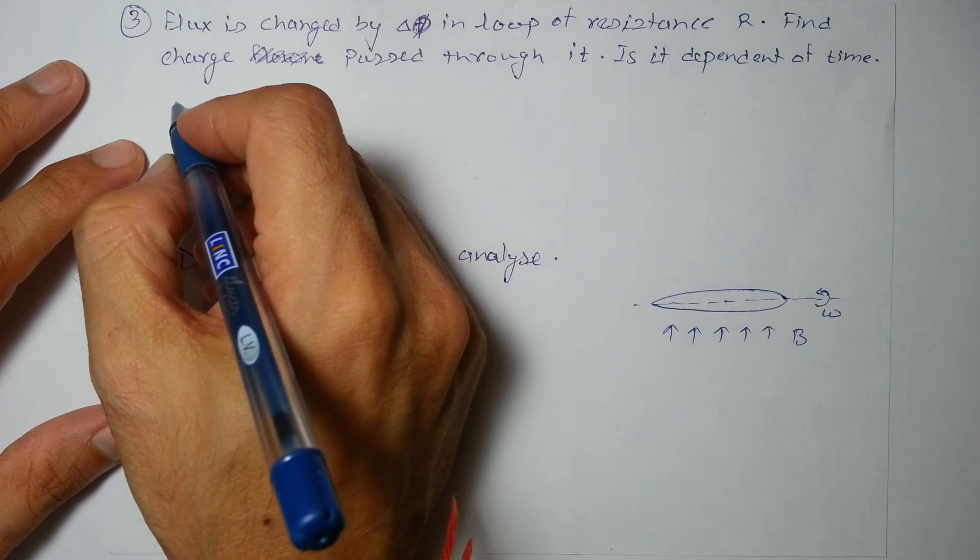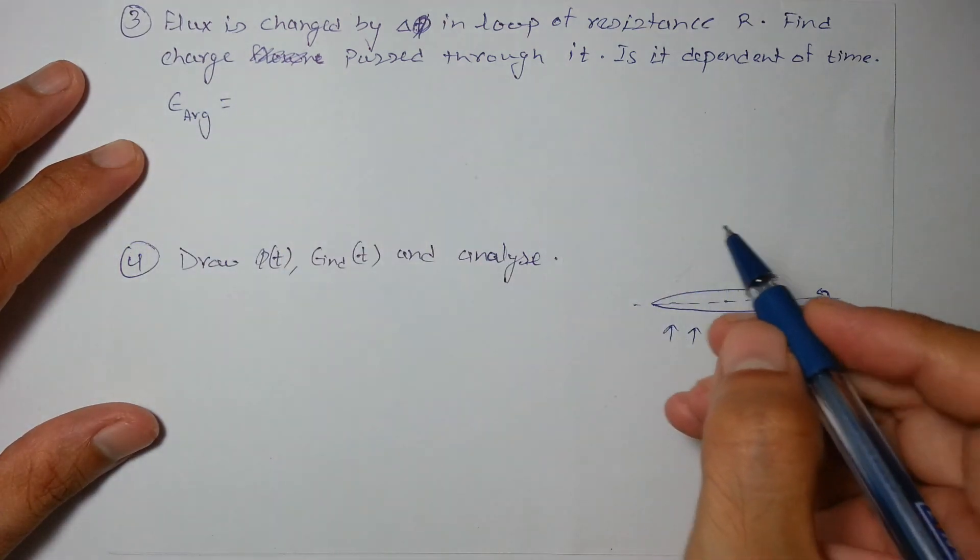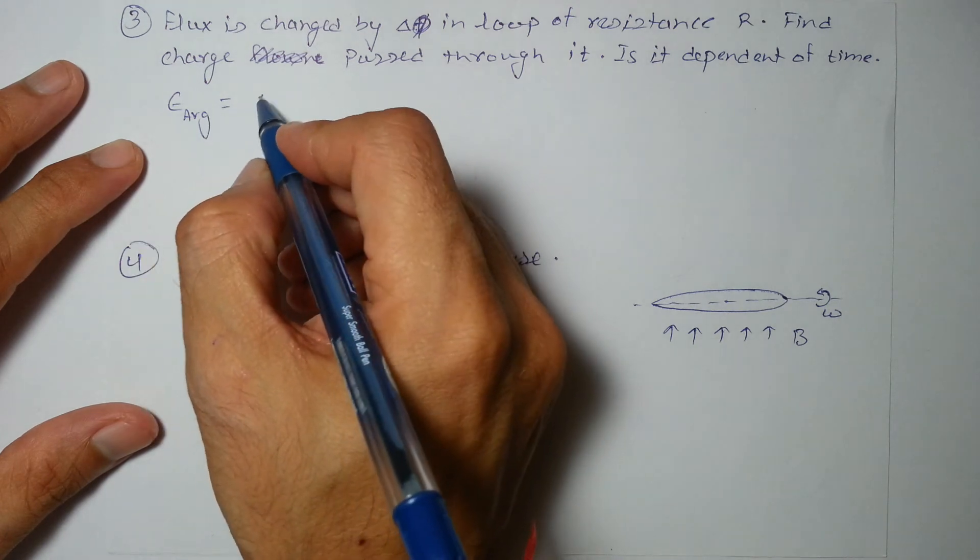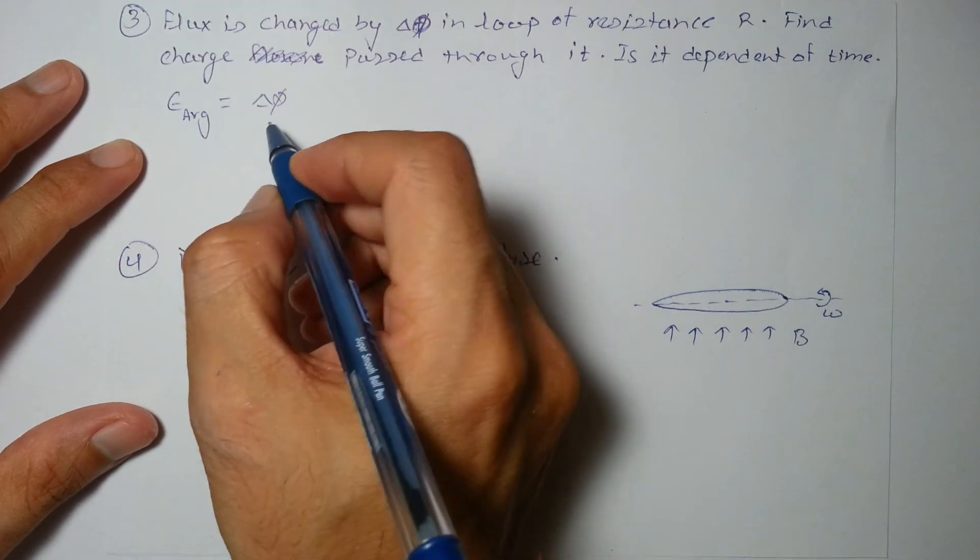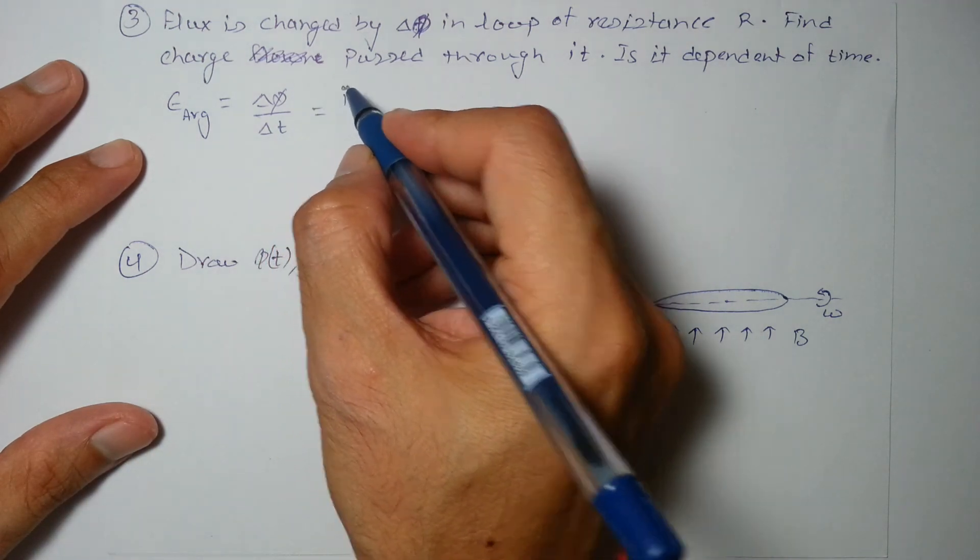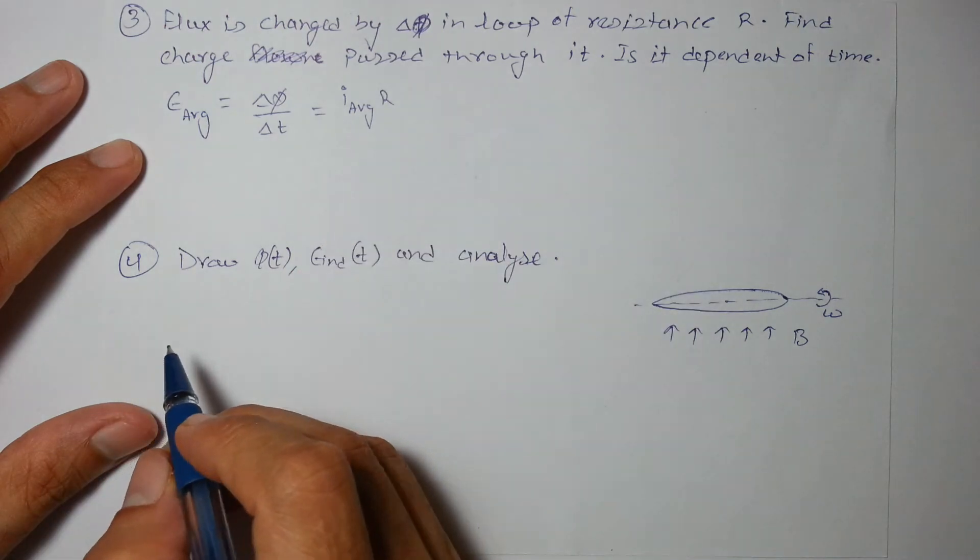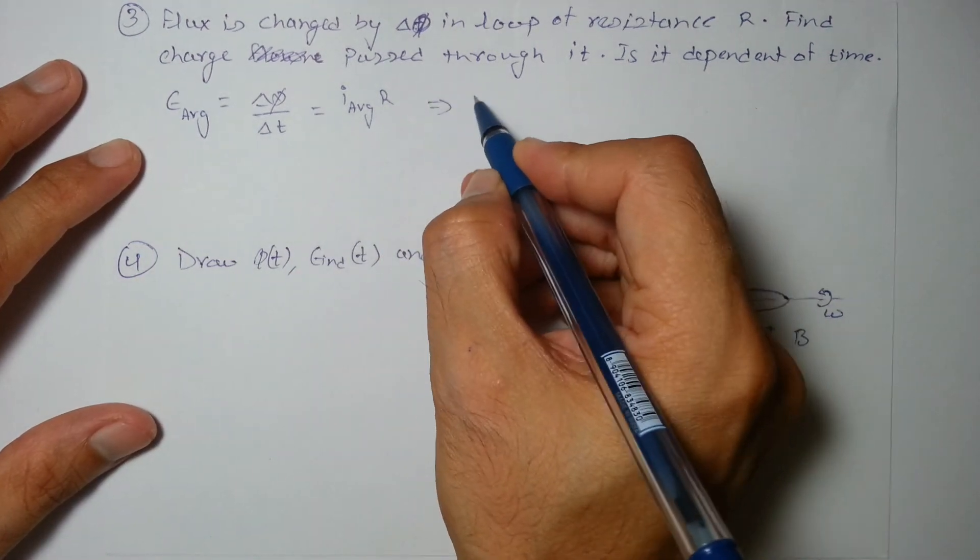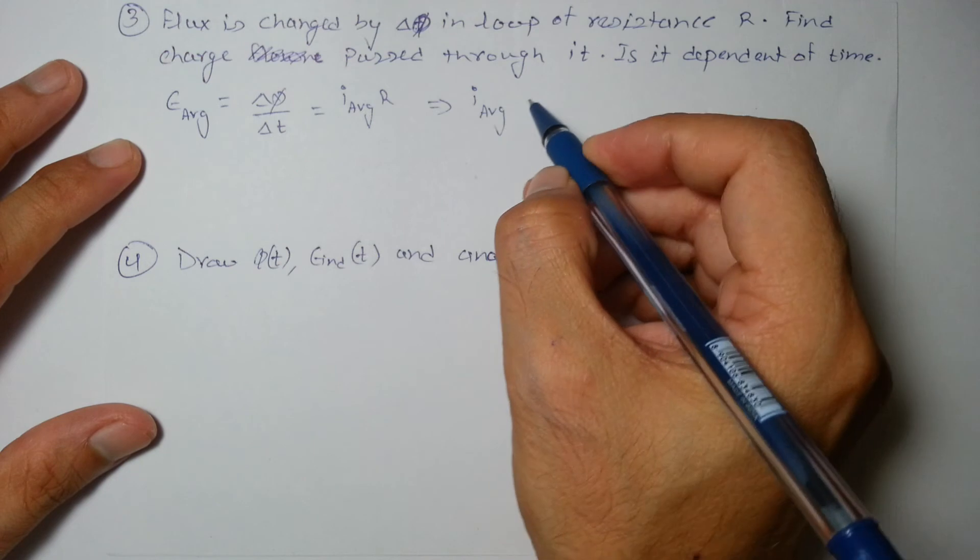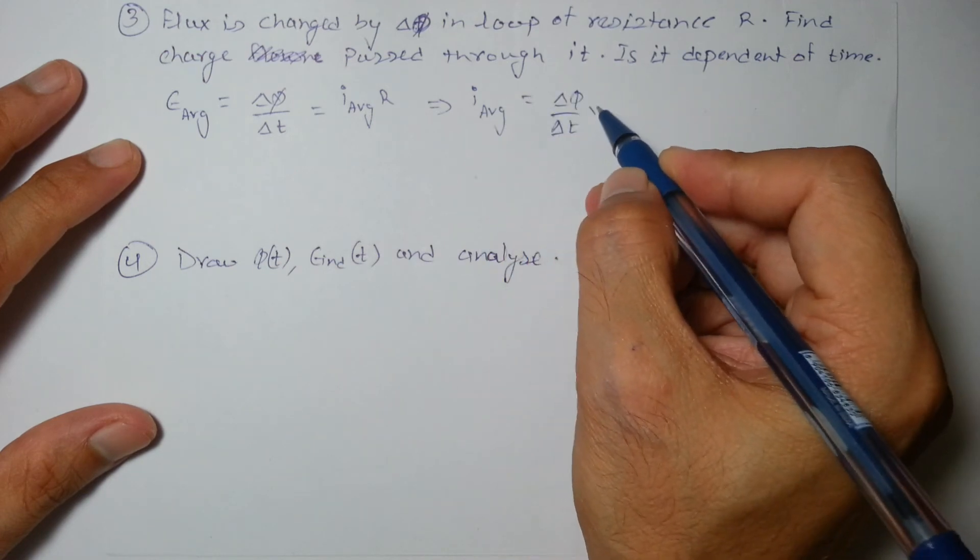So we can say the average EMF induced, let the time taken be delta t. So the average EMF induced is change in flux by time taken. So that is I average into R. So the average current will be delta phi by delta t into 1 by r.